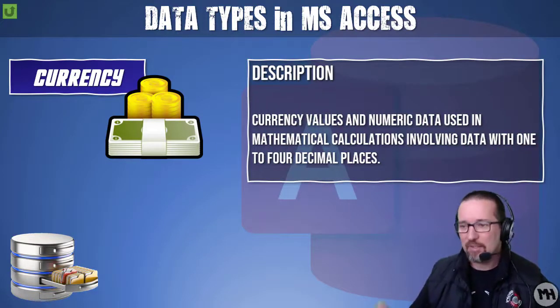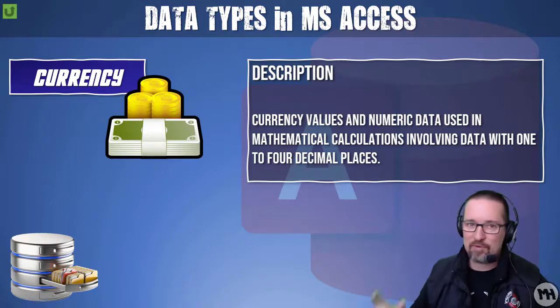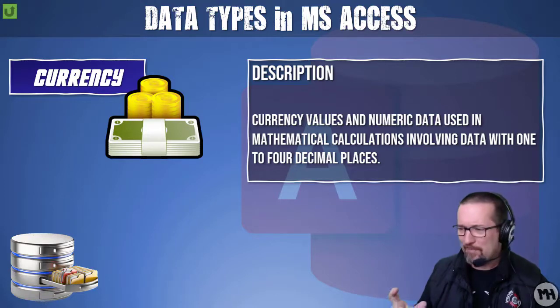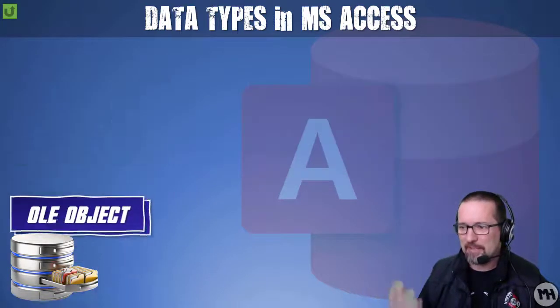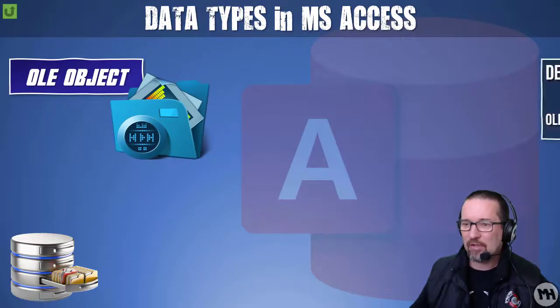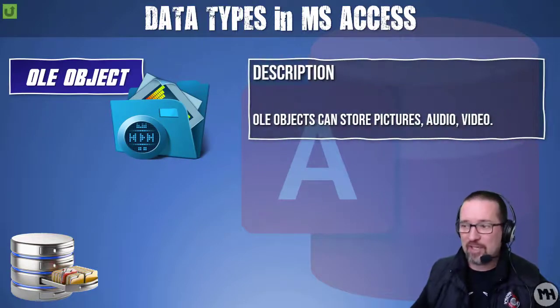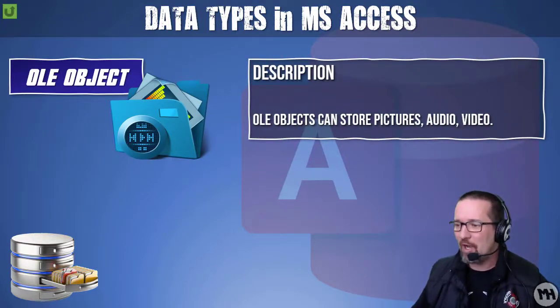Currency is used for any numeric data that needs to be formatted as currency. There's a dedicated currency field for that, and it supports up to four decimal places.